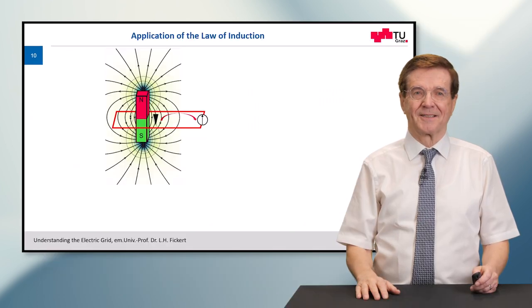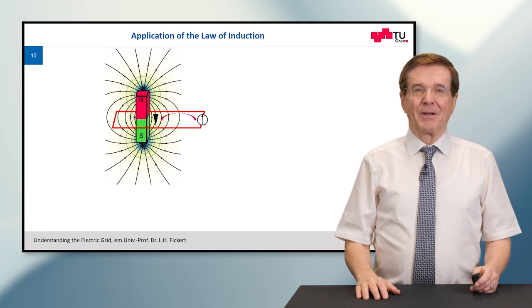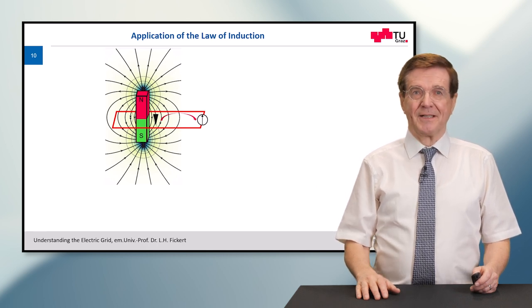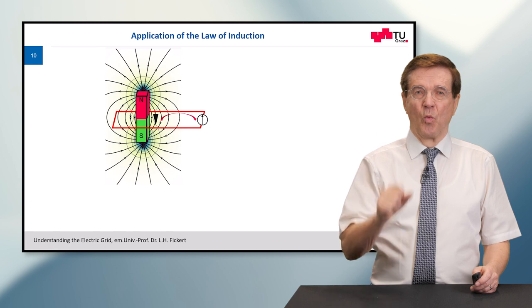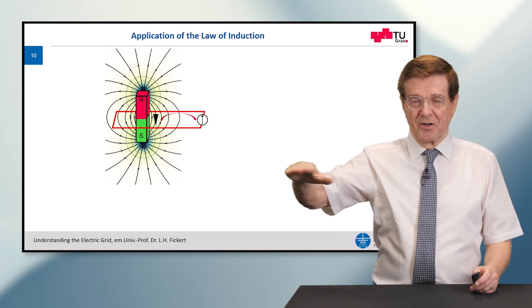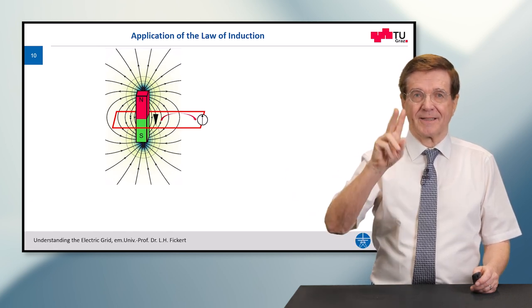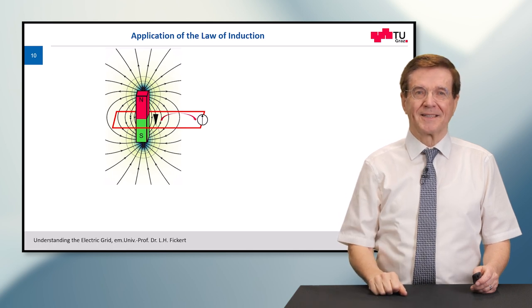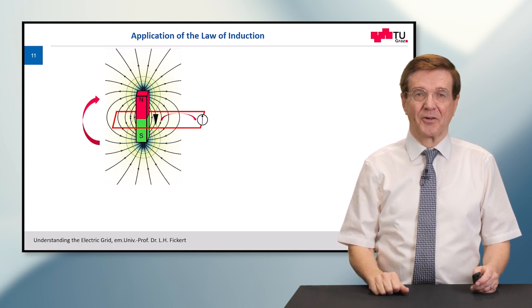Let's get started. We apply the law of induction. For this, we need two essential things. One is a horizontal coil that is lying. And second, it is a magnet that can turn in this coil.